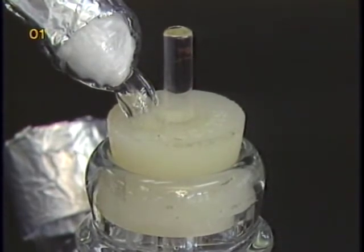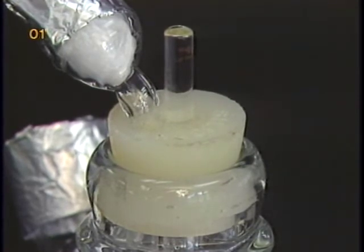The assembled flask can then be autoclaved for 20 minutes at 121 degrees in a dry cycle.